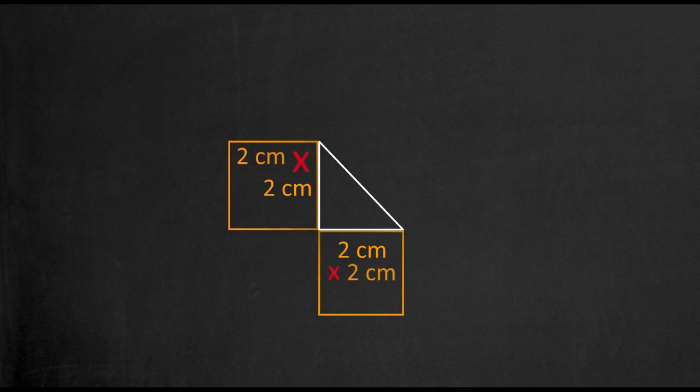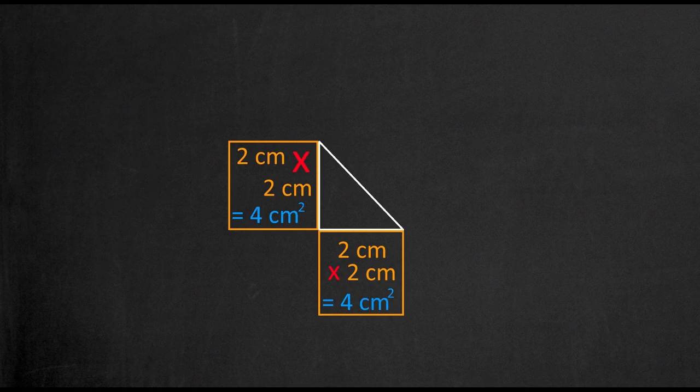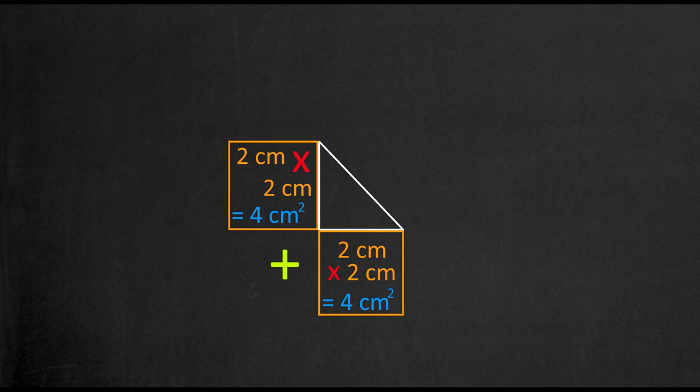First, we would need to square both the legs' measurements, and because they are both 2 cm, squaring both of these values would give us a product of 4 cm squared each. Thus, we would simply need to add both products' values to give us the area of the hypotenuse squared.